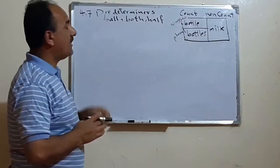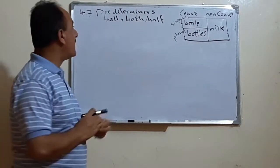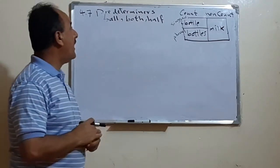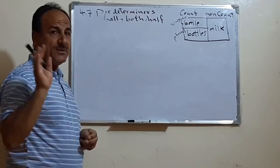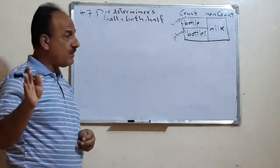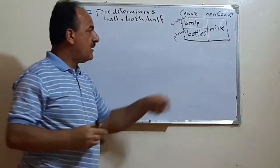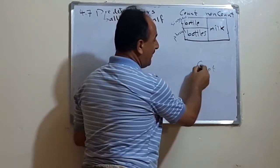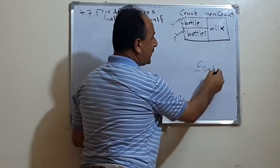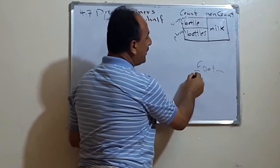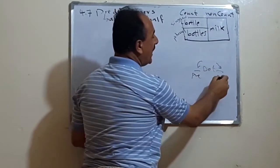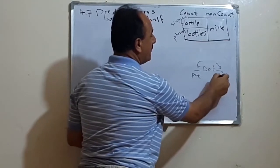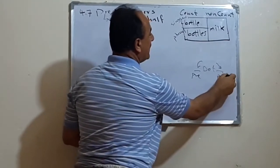In section 4.7, we have what we call the predeterminers. Remember, we said we have determiners, and then we have another group we call predeterminers, and then we have post-determiners.